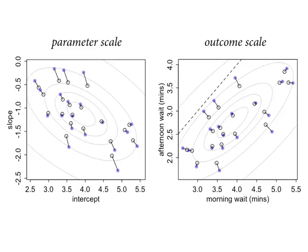All the estimates are below the dashed horizontal line - the point where morning and afternoon wait times are equal - so afternoon wait times are shorter in the population. The shrinkage scales with distance from the invisible regression line that things are attracted to in the two-dimensional space. In a three-dimensional space, there's a plane that everything's shrinking towards - hyperplanes and higher-dimensional generalizations apply as you extend to more parameters.